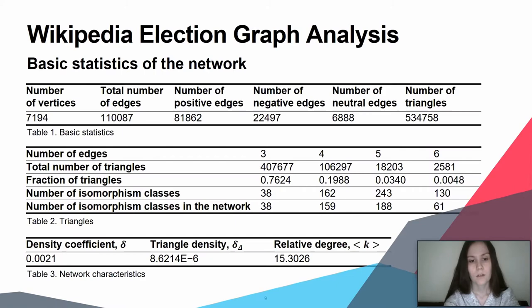Here on this slide, we can see basic statistics on Table 1. On Table 2, there is some more information about triangles divided by the number of edges: 3, 5, and 6. We can underline that the triangles with 3 and 4 edges cover 96% of all triangles. Also, we have some network characteristics on Table 3.